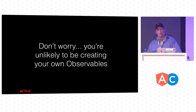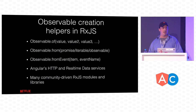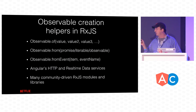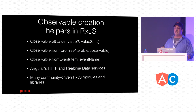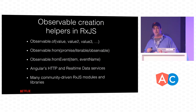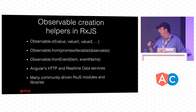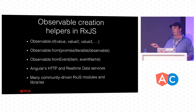If this seems complicated, don't worry — you're not likely to be creating your own observables this way very often. There are a lot of creation helpers in RxJS. There's Observable.of, similar to Array.of, where you pass values and it creates an observable. There's Observable.from, which is very powerful: you can pass it any promise, any iterable like a generator or array, or any observable — including Kefir, Bacon, or Most.js — as long as they've implemented the Symbol.observable method returning an object with a subscribe function.